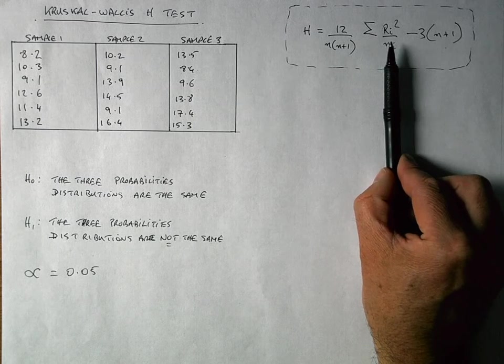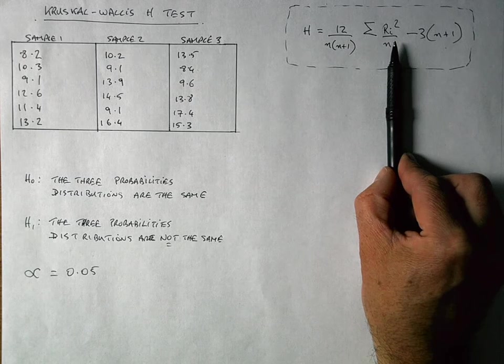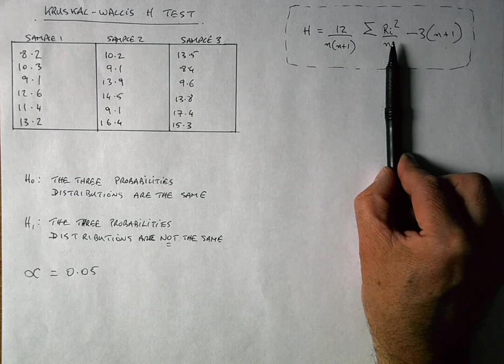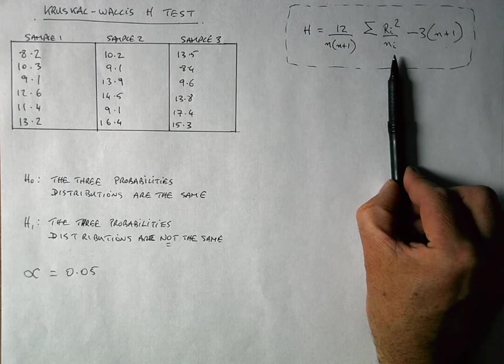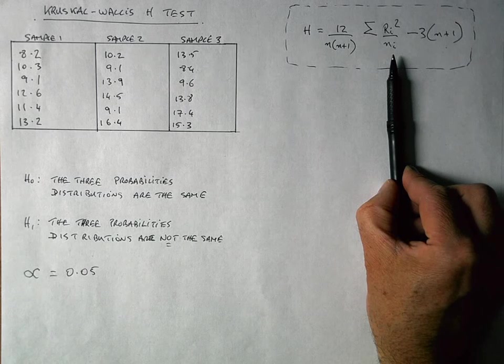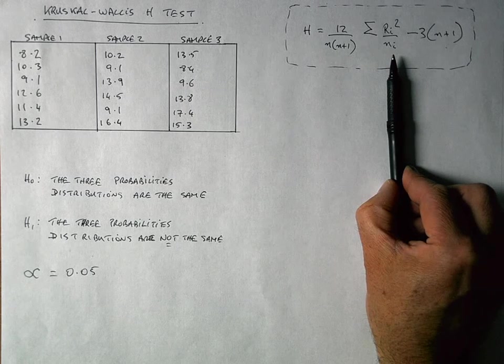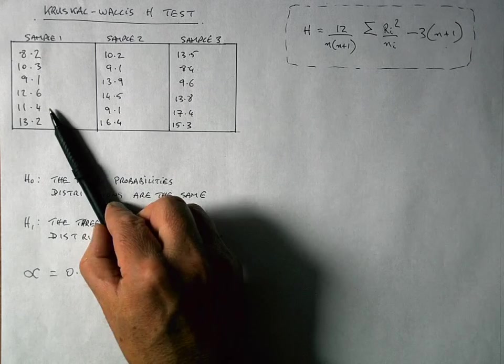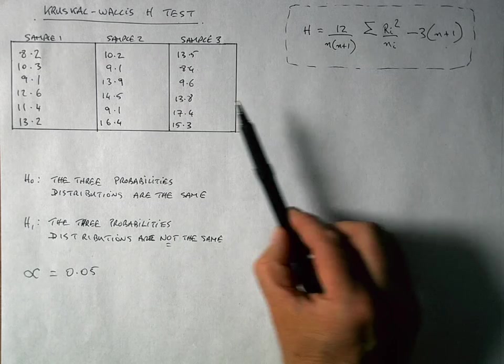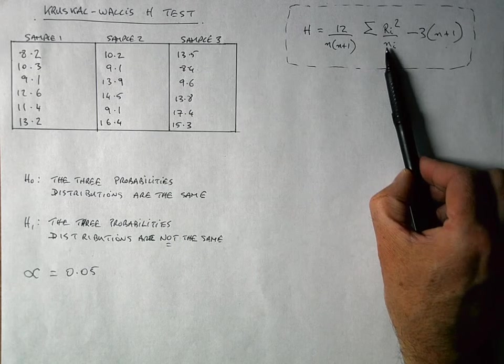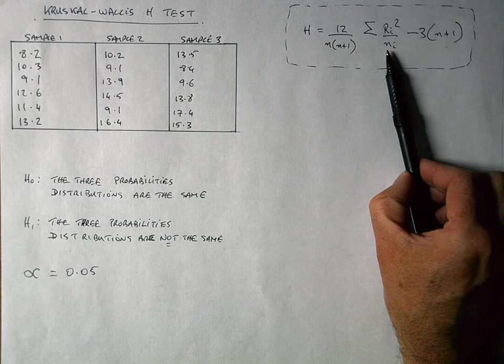The business bit of this formula is the bit in the center here. We need to sum up R, which is all the ranks, I for each numbers of groups. So I've got three groups, so we're going to do this three times. And we're going to divide that by the number in each group. And it happens to be 6 in all cases here. So I've got 6 in sample 1, 6 in sample 2, and 6 in sample 3. So I'm going to be doing this three times and then adding up the three values for this bit in the middle.